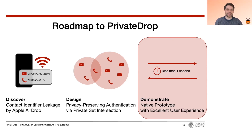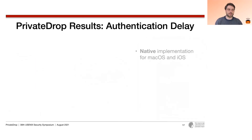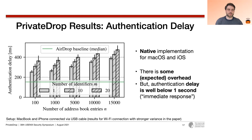Now let's show how well our new protocol performs in practice. We implemented a native prototype of PrivateDrop for macOS and iOS written in Swift. You can see here the authentication delay of PrivateDrop depending on the size of the address book and the number of own contact identifiers. In green, we show the AirDrop baseline delay, which is basically independent of these set sizes. We note an expected overhead for PrivateDrop compared to the original protocol, but we managed to achieve an authentication delay well below one second, which is considered an immediate response in human perception. This shows that PrivateDrop is ready for practical deployment.